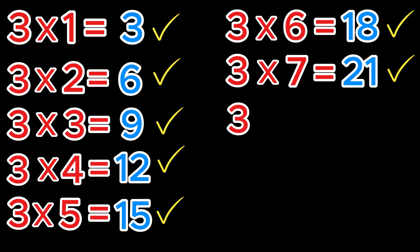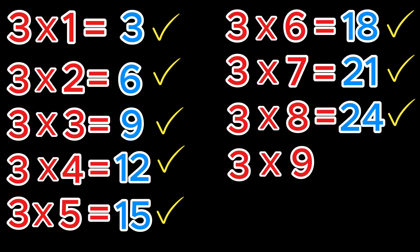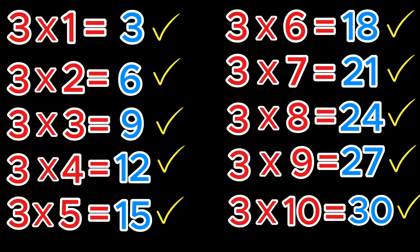Three times eight equals twenty-four. Three times nine equals twenty-seven. Three times ten equals thirty.